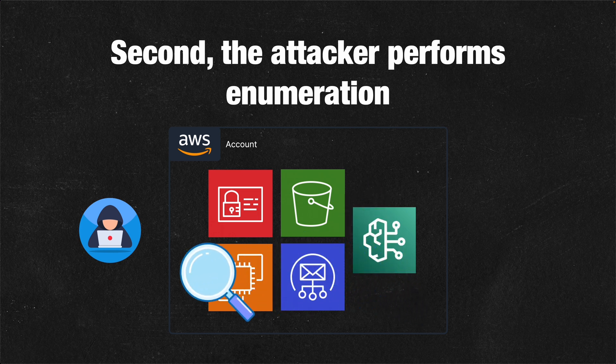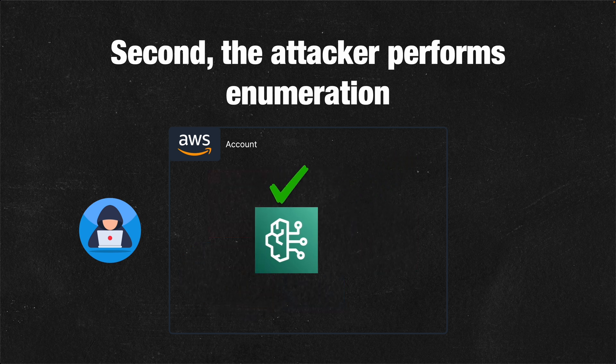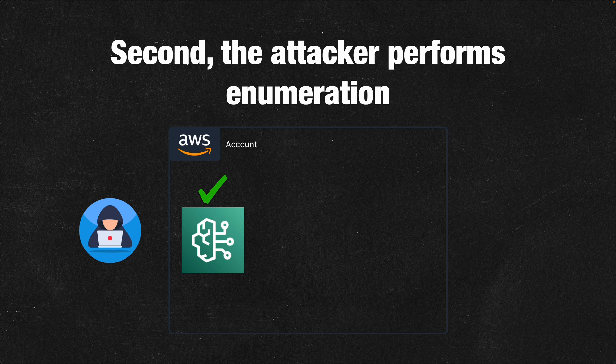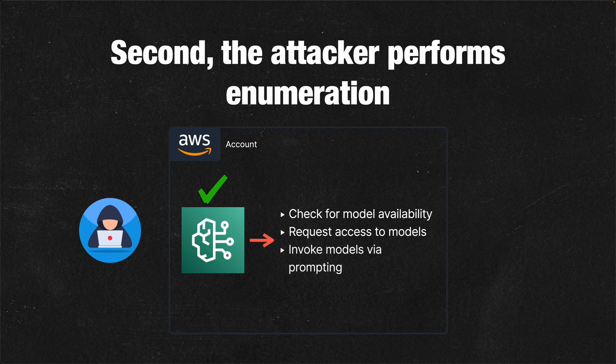A lot of times this will be automated. Through enumeration, if they detect access to Bedrock, they typically do a few things. First, they'll check for model availability. Second, they'll request access to models. And then third, they'll invoke the models via prompting.